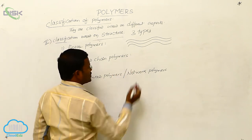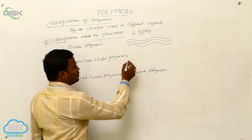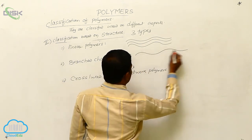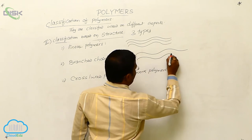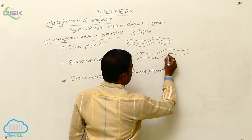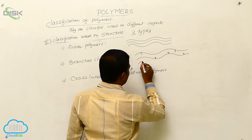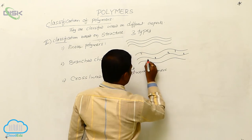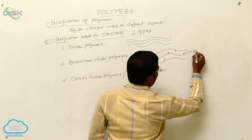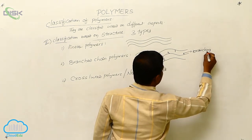Branched chain polymers are also present in a linear shape, but a little branchings are observed somewhere in the linear chain. These branchings are present in the respective polymers.